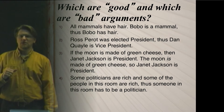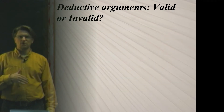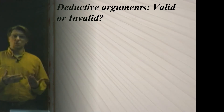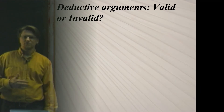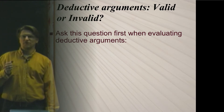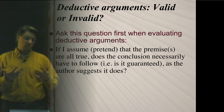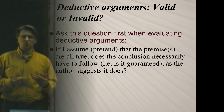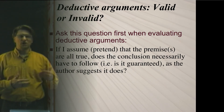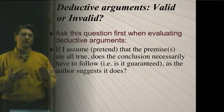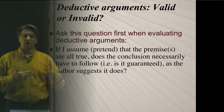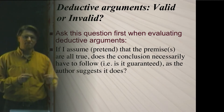So we'll come back to these arguments, but first I want to talk about some terminology — specifically deductive arguments and asking whether those deductive arguments are valid or invalid. When you know you're dealing with a deductive argument, you want to ask this question: if I assume the premises are all true, does the conclusion necessarily have to follow? That is, is it guaranteed? What makes something a deductive argument is that the author thinks the conclusion is guaranteed by the premises. Sometimes the author makes a mistake — they think it's guaranteed, but it really isn't.